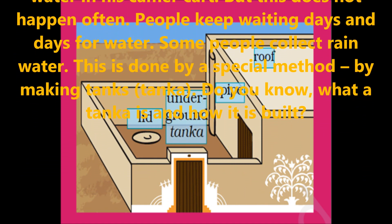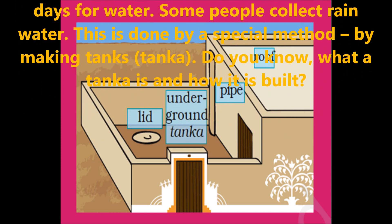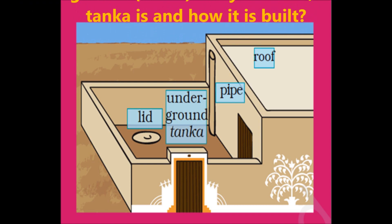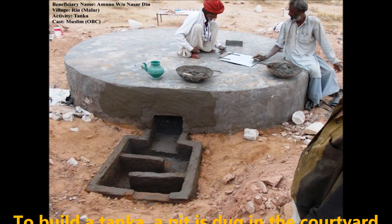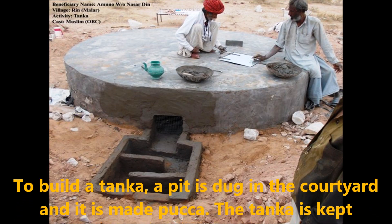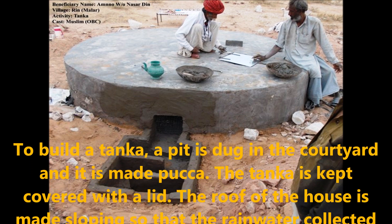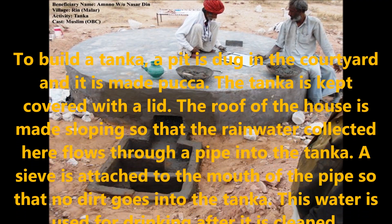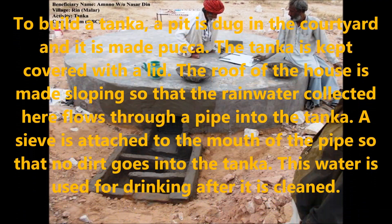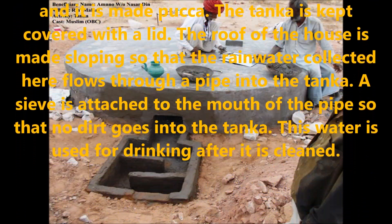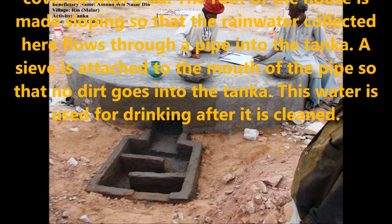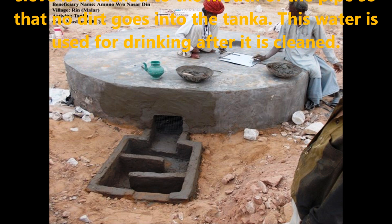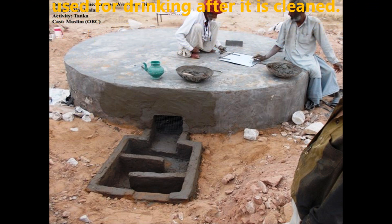Some people collect rainwater. This is done by a special method — by making tanks called tankas. To build a tanka, a pit is dug in the courtyard and it is made pakka. The tank is kept covered with a lid. The roof of the house is made sloping so that rainwater collected flows through a pipe into the tanka. A sieve is attached to the mouth of the pipe so that no dirt goes into the tanka. The water is used for drinking after it is cleaned.